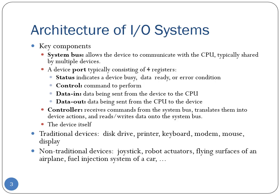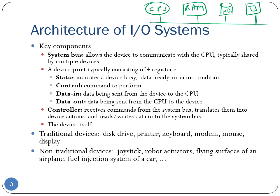Let's begin our discussion with the architecture of the I/O subsystem. Recall the architecture of a basic computer system: we had the CPU, then RAM or main memory, and then a bunch of I/O devices — for example the hard disk, a monitor or screen — and all of these were connected with the help of a system bus. The system bus is the component that allows all other components to talk to each other.